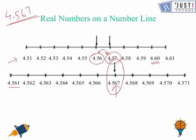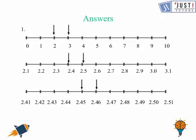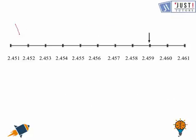Now we move ahead to the practice question. Here is a question for you. To try this question you can pause the video. So here comes the answer of this question. This is step 1, step 2 and step 3. This is the final step which represents 2.459 on the number line.